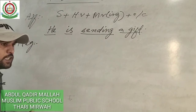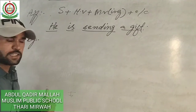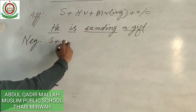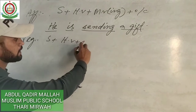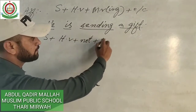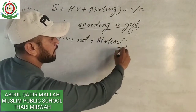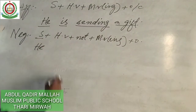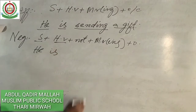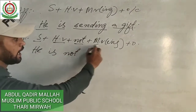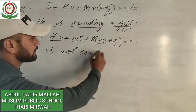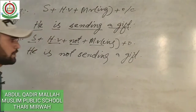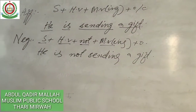Now we will change the sentence into a negative. A negative sentence shows a negative sense. The structure is: Subject + helping verb + not + fourth -ing form of main verb + object. For example: 'He is not sending a gift.' Here, 'he' is the subject, 'is' is the helping verb, 'not' comes third, then 'sending,' and then the object 'a gift.'